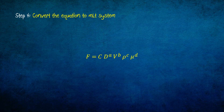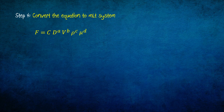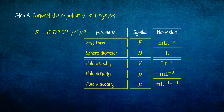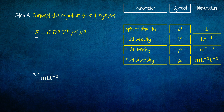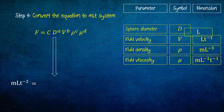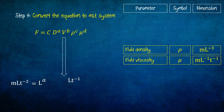Step 4 consists of converting the power equation to the MLT system. For this step, we refer to our previous table of dimensions and replace each of the variables with its dimensions.